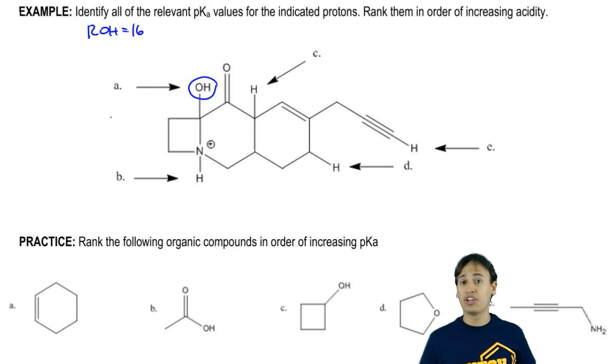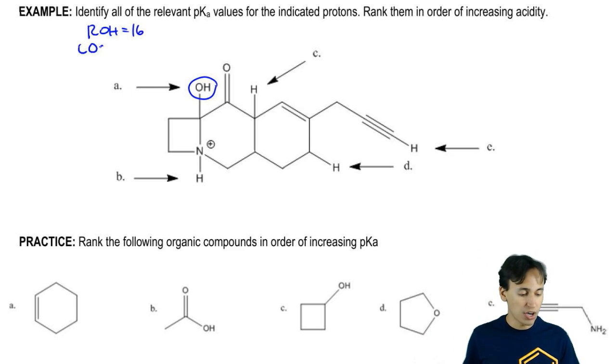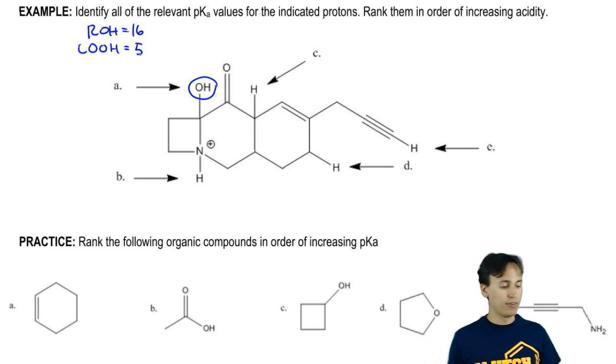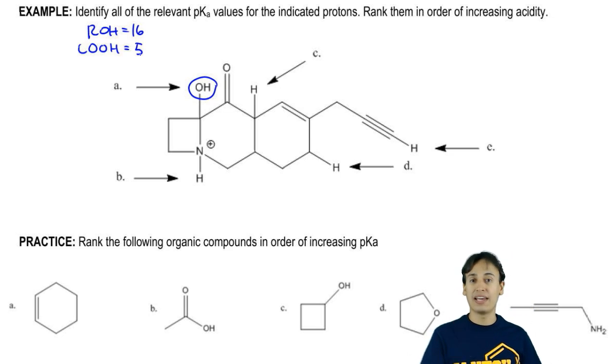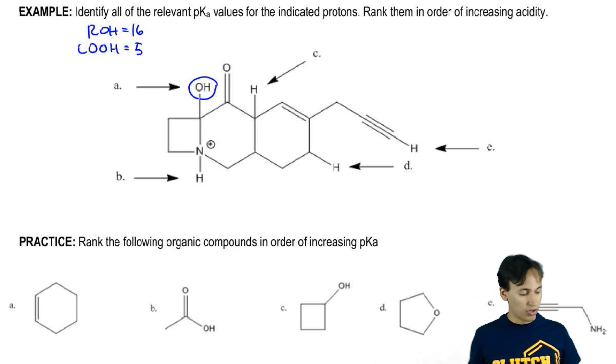Then we also had carboxylic acid. Carboxylic acid was COOH and we see that that one's a little bit stronger of an acid. It has a pKa of 5. This just goes back to functional groups. Is molecule A, that proton, is it an alcohol or is it carboxylic acid?